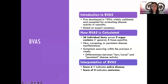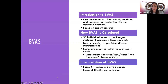The BVAS is actually 56 items across nine organ systems — one is general, and the others are tissue-specific. It shows new, worsening, or persistent disease. It is not meant to be scored for disease outcomes that are from scarring — it has to be active disease. If you have a positive score, then it is active disease, and a score of zero would mean that you're in remission. All of this is based on the previous four weeks of symptoms that the patient may have.